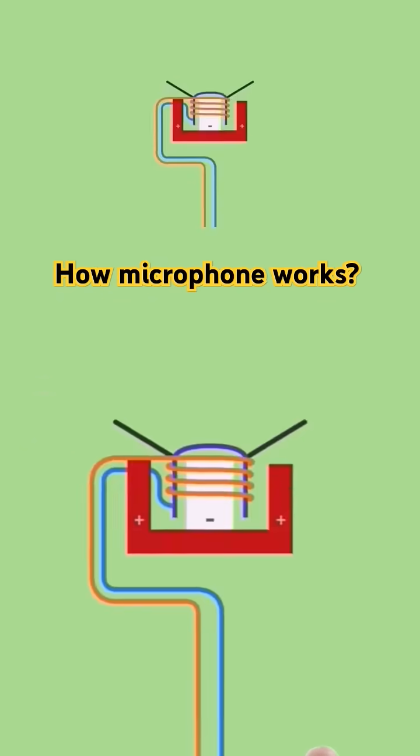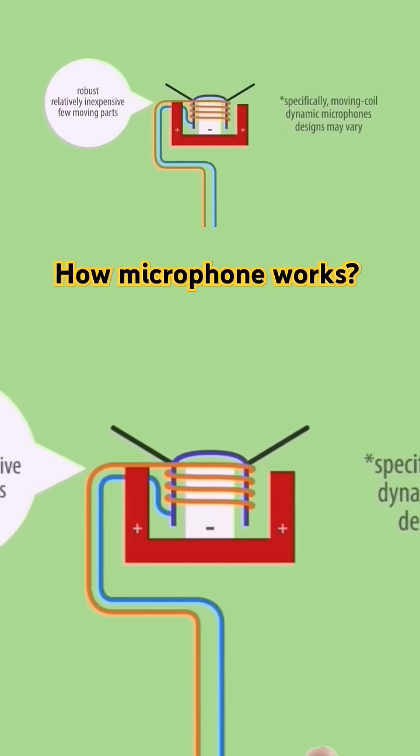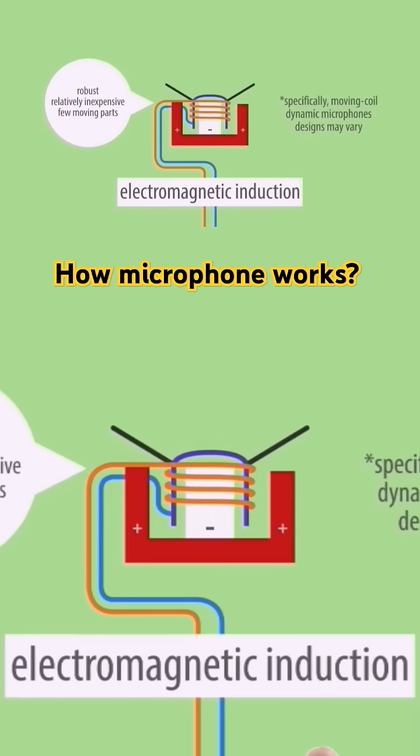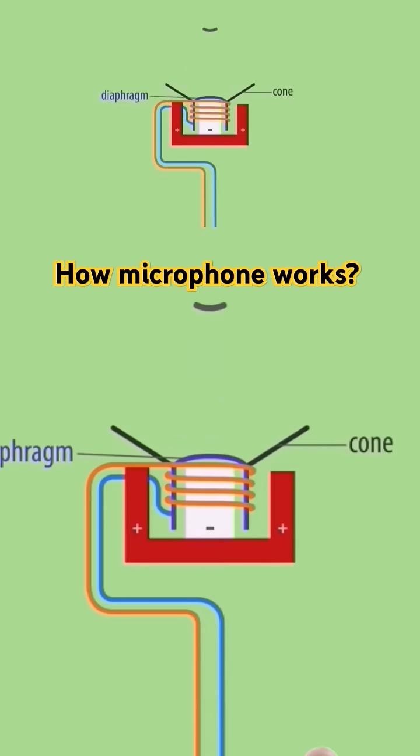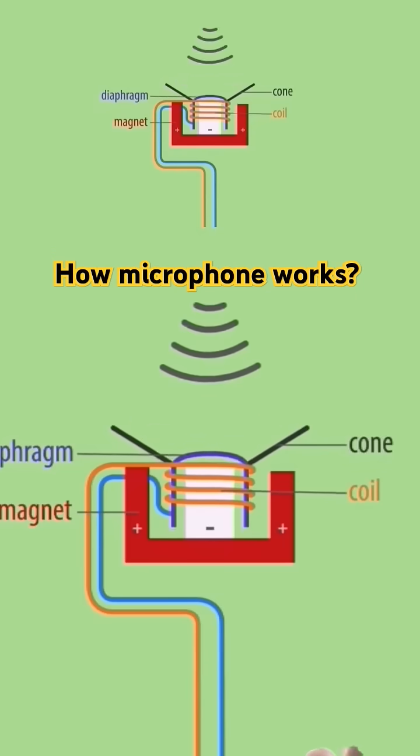The dynamic microphone is the most commonly used. These work using electromagnetic induction. Sound waves hit a thin diaphragm which causes it to move. This diaphragm is attached to a coil surrounded by a magnet. This magnet creates a magnetic field around the coil.